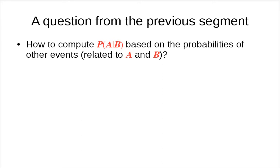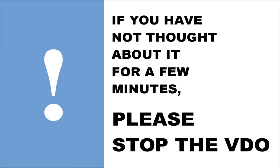We know how to do that by just counting the number of possible outcomes that satisfy these properties. Please stop the video and try to figure the answer out by yourself first. It's really important that you try to think about this, because if you can figure out the answer by yourself, you understand a lot more.